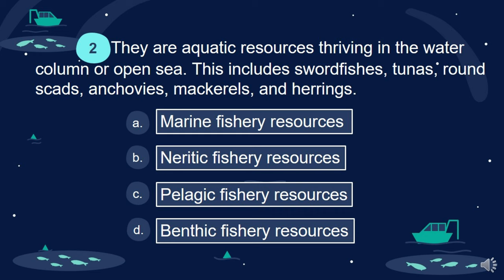Question 2. They are aquatic resources thriving in the water column or open sea. This includes swordfishes, tunas, round scads, anchovies, mackerels, and herrings.